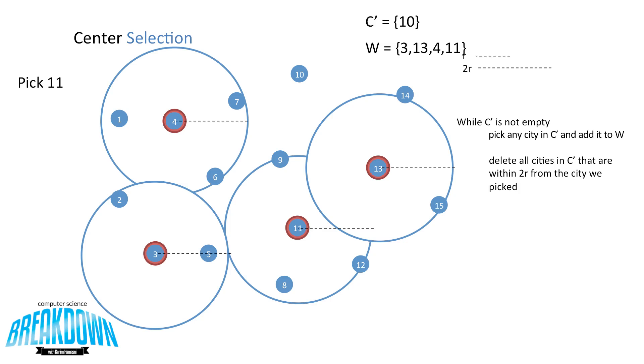All that's left is city 10, so we pick that next to make our last warehouse placement. So we can now remove 10 from c' and add it to w. And trivially we can draw the circle around it. However, since it is the last city we are not selecting any more cities to delete. C' is now empty and the algorithm is complete.